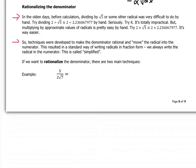So techniques were developed to make the denominator rational and move the radical into the numerator. This resulted in a standard way of writing radicals in fraction form, and we always write the radical in the numerator of a fraction. This is what we call simplified. So if we want to rationalize the denominator, there are two main techniques.